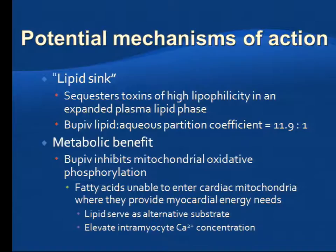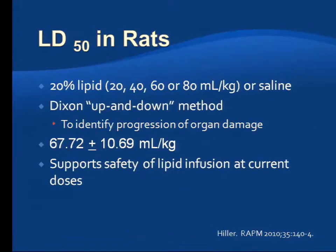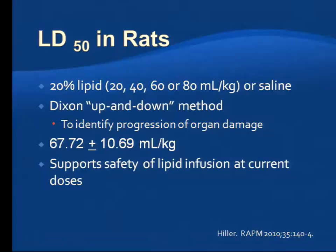There may be a secondary metabolic benefit from the lipid as well, as it can be a substrate for cardiac muscles. Hiller looked at the lethal dose in rats of lipid using a Dixon up-and-down method, sacrificed the animals, and looked at organ damage and neurologic and cardiac symptomatology with increasing doses. Except for transient elevations in serum lipids, very little was seen. The LD50 in rats was calculated at about 67 plus or minus 10, which is way in excess of any dosage we'd use in human beings.